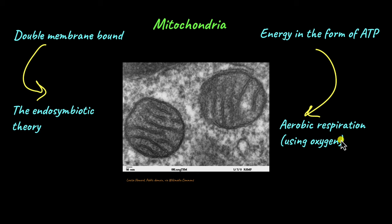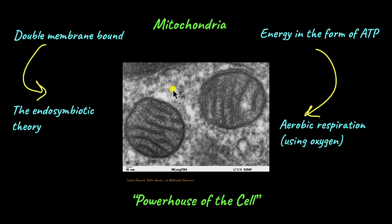Aerobic because it uses oxygen. Because of this main function of producing energy in the form of ATP, mitochondria are often referred to as the powerhouse of the cell. This is a term you are going to be familiar with for the rest of your life — even if you do not study biology beyond your 11th and 12th grade, you will still remember that mitochondria are known as the powerhouse of the cell.